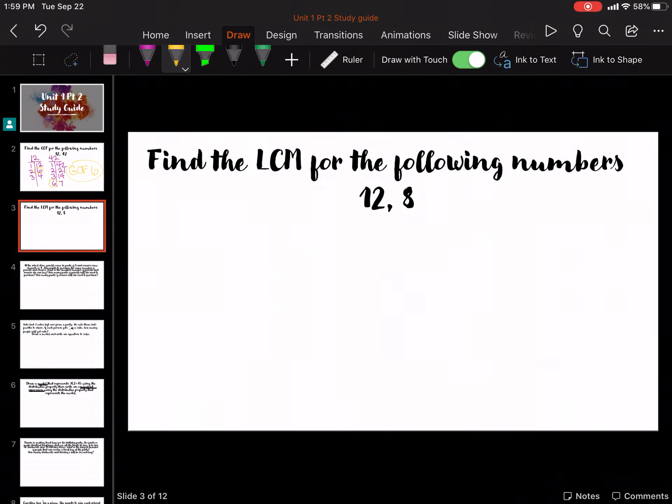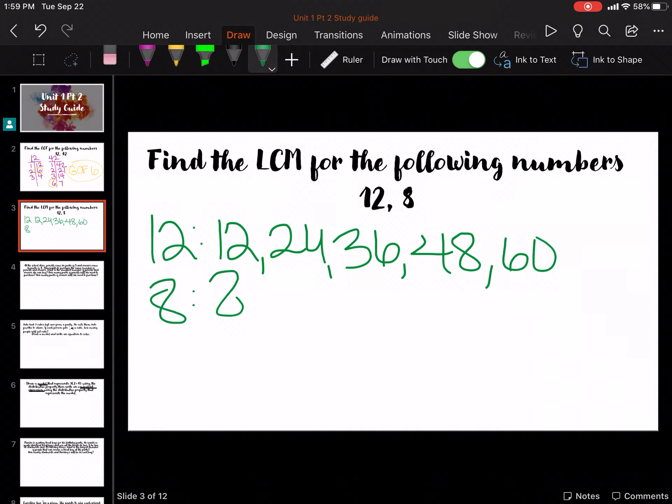Here we go, LCM, least common multiple. So let's do our multiples, 12, 24, 36, 48, 60, 8, 16, 24. And once you hit one, you don't need to keep going. So LCM is 24.